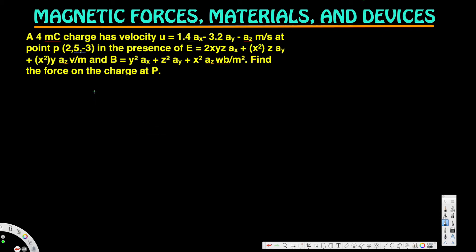This problem involves a 4 millicoulomb charge with velocity u equal to 1.4 ax minus 3.2 ay minus az meters per second at point P(2, 5, -3), in the presence of an electric field E and a magnetic field B. The question asks for the force on the charge at point P.